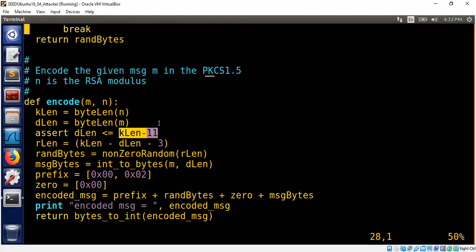It puts a constraint that the data should have 11 bytes less than the size of the modulus, as I explained on the whiteboard. Where does the 11 come from? Because you remember, the three bytes for the 0x00, 0x02, and then a 0x00. And then you need at least eight bytes for the random number.